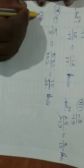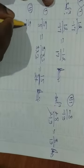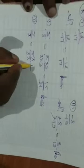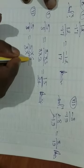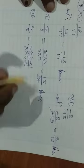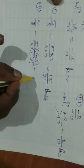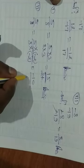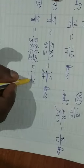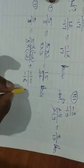Question number 10 part 1: the required numerator here is minus 10. So 5 by 8 is multiplied by minus 2 over minus 2, giving numerator 5 × minus 2 equals minus 10 and denominator 8 × minus 2 equals minus 16. So minus 10 by minus 16 is the answer.